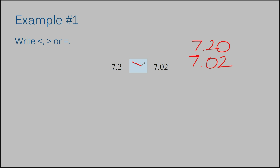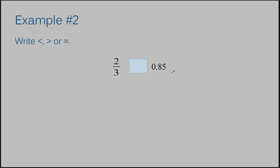So I'm going to draw my inequality symbol facing the seven and two tenths. Let's move on to example number two. This one isn't quite as easy as our last example. We're dealing with a fraction here and a decimal here. Our directions told us that we need to make our numbers in the same form — either fraction, decimal, or percent. That means both numbers need to be fractions, both numbers need to be decimals, or both numbers need to be percents. It does not matter which you choose, but both numbers need to be in the same form. Right now we have a fraction and a decimal, so we've got to fix something.